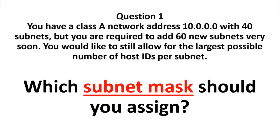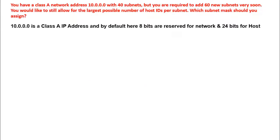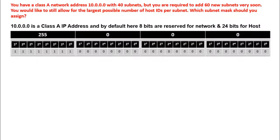Now let's continue. As we noted, 10.0.0.0 is a Class A IP address. By default in a Class A IP address, the first 8 bits are reserved for the network and the remaining 24 bits are reserved for the host. The default subnet mask of a Class A IP address is 255.0.0.0.